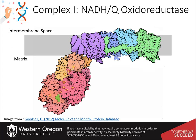NADH brings free energy to the electron transport chain by binding to the largest of the respiratory complexes, the NADH-Q oxidoreductase, or complex I. This L-shaped enzyme contains a hydrophobic domain embedded in the inner mitochondrial membrane and a hydrophilic arm protruding into the mitochondrial matrix containing the NADH binding site. The whole complex consists of 45 subunits and is almost 1 megadalton in mass. The membrane-bound portion, shown here in green, blue, and purple, pumps protons across the membrane. Each pair of electrons obtained from NADH will power the transport of 4 protons.